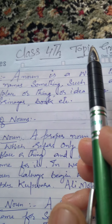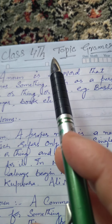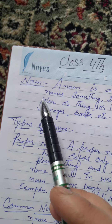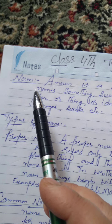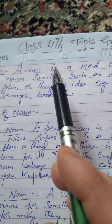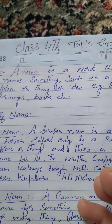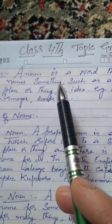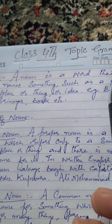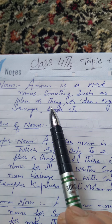The last four subjects. English topic is grammar. A noun is a word that names something such as a person, place, or thing.